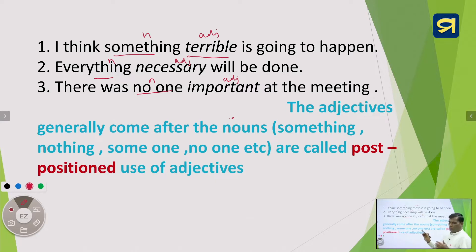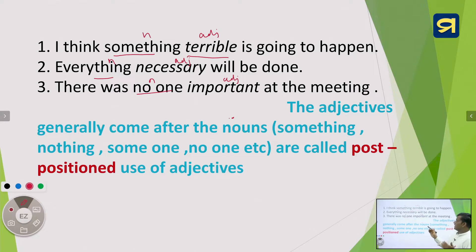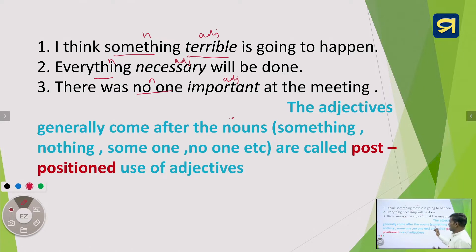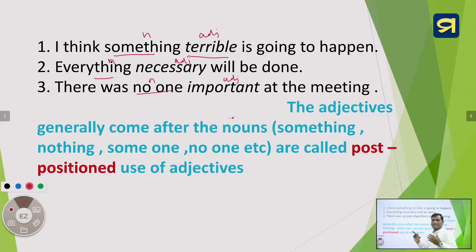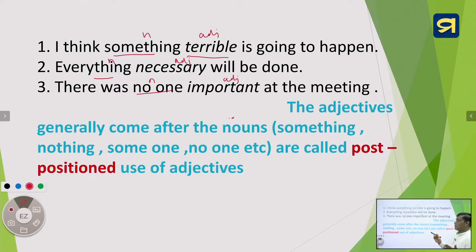So the adjectives which come after nouns like something, everything, no one, nothing, anything are called post-positioned use of adjectives. Previously we read attributive use and predicative use of adjectives. This is another use — the post-positioned use of adjectives.